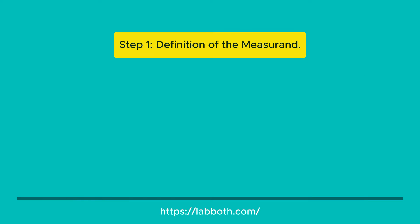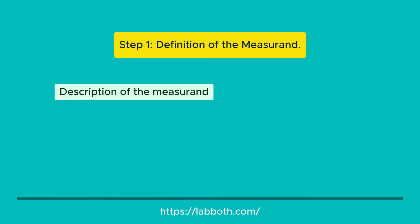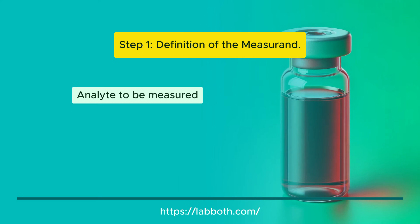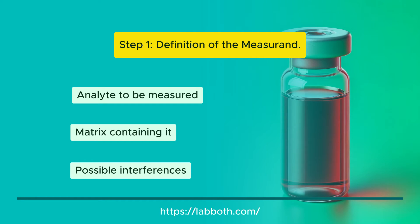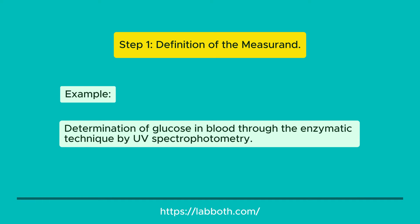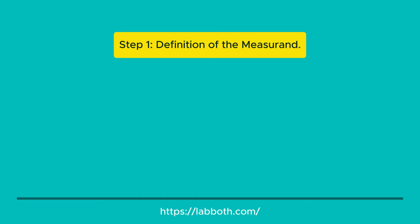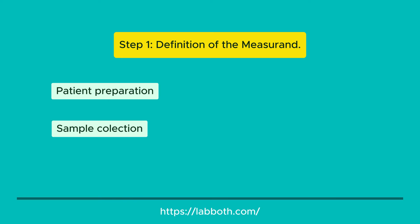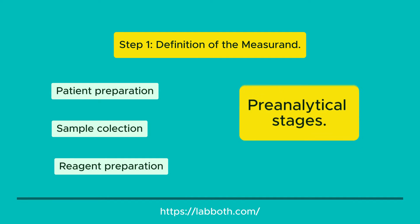Step 1: Definition of the measurant. Before estimating the uncertainty of a quantitative method, provide a complete description of the measurant, including the analyte to be measured, the matrix containing it, and its possible interferences. Example: determination of glucose in blood through the enzymatic technique by UV spectrophotometry. During this description, you can also include related pre-analytical aspects such as patient preparation, sample collection, and reagent preparation.